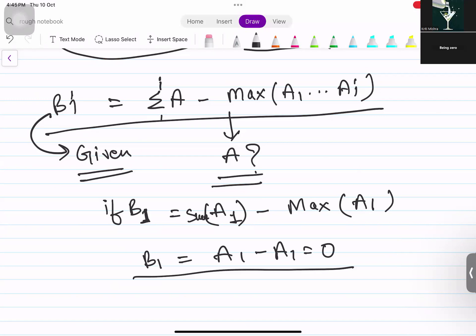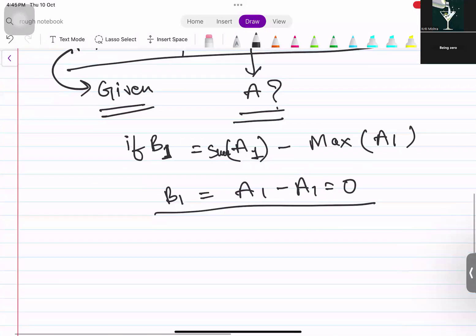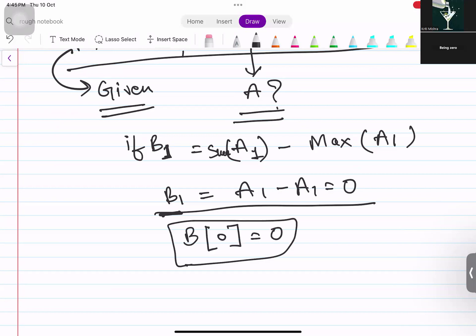Can we say that for every element, every element of B1 would be 0? Yes, it will be 0. Not every element, but first element. For every array, first element will be 0. This is the thing that we observed.